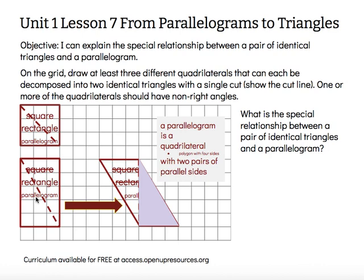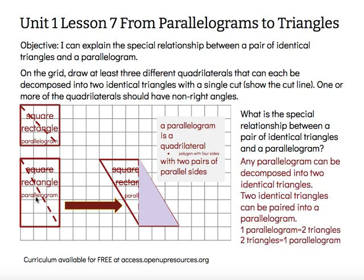I can take any parallelogram — whether it be a square, a rectangle, or a parallelogram that's not a square or rectangle — and connect two opposite vertices, and I will decompose it into two congruent or identical triangles. So any parallelogram can be decomposed into two identical triangles, which means we can think the other way around: two identical triangles can be paired together to make a parallelogram. That relationship is: one parallelogram equals two triangles, or two triangles equal one parallelogram.